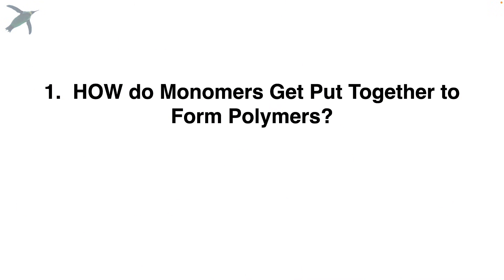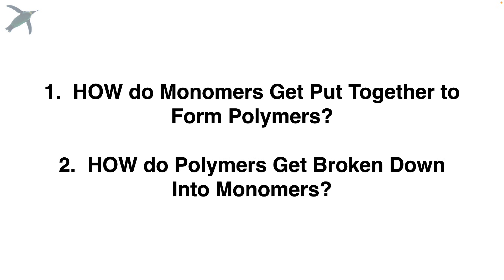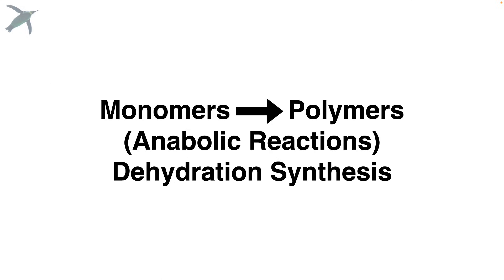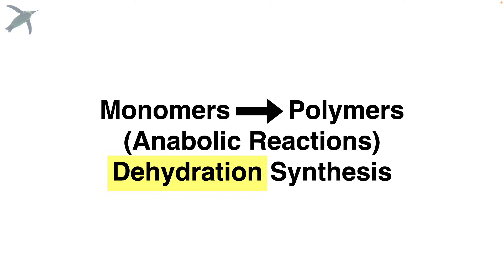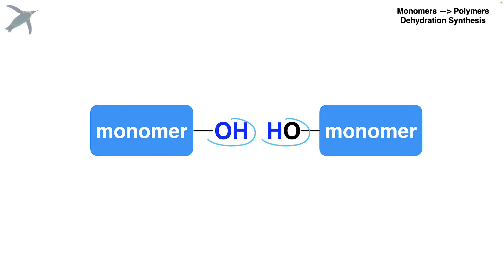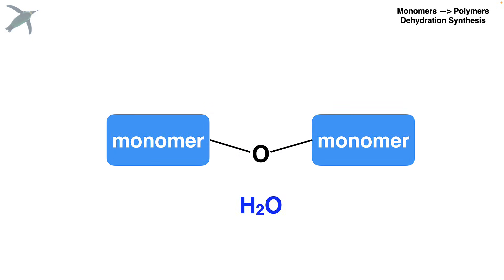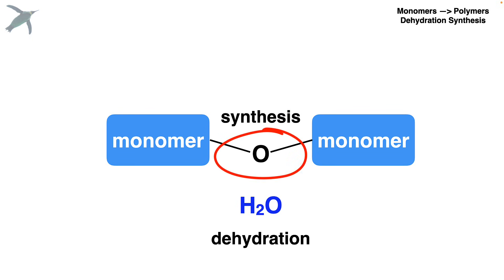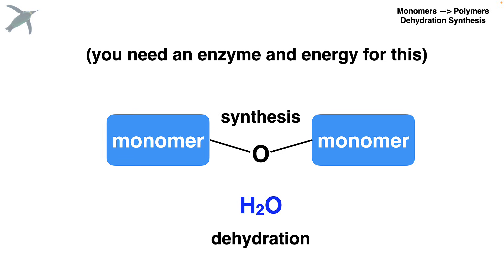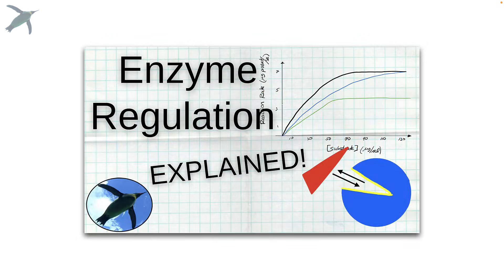So the two questions are: how do monomers get put together to form polymers, and how do polymers get broken down into monomers? Monomers get built up into polymers via reactions called dehydration synthesis. The name tells you so much about what's going on. Dehydration — water comes out. Synthesis means to build. I'm showing you two hydroxyl groups. Watch the atoms in blue — water comes out, that's dehydration. And that new bond formed, that's the synthesis — we just built a new bond. Now this doesn't happen by itself; you actually need an enzyme and energy for this.